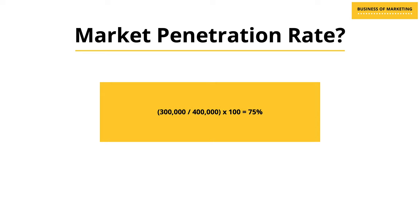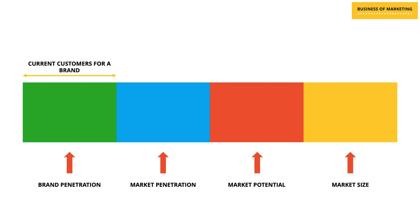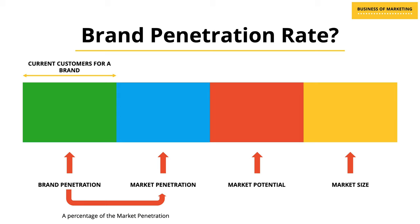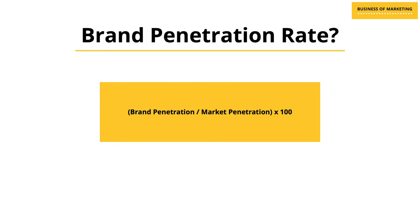A part of the market penetration is the brand penetration, which is the current customers of the brand. Currently, the market leader has 200,000 customers out of the total category customers of 300,000. To calculate the brand penetration rate — which is a percentage of market penetration — we take brand penetration divided by market penetration multiplied by 100. So 200,000 divided by 300,000 multiplied by 100 gives 66.67%, which is the brand penetration rate for the market leader in Singapore.